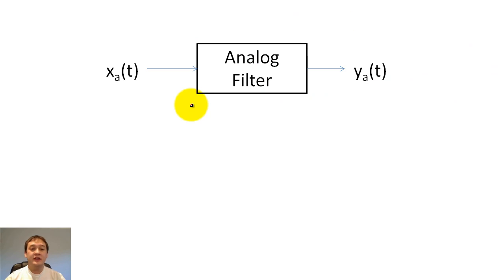In this lecture, I will discuss the basics of digital filters. In analog signal processing, we created filters from resistors, capacitors, inductors, and op-amps.